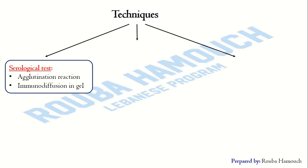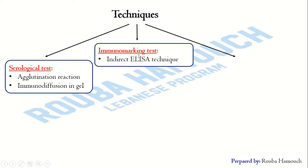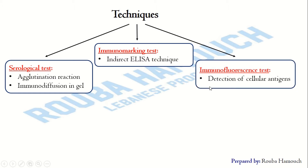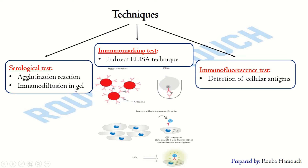There are three techniques that use antibodies to search for these molecules: the serological test comprising agglutination reaction and immunodiffusion in gel; the immunomarking test, especially the indirect ELISA technique; and the immunofluorescence test. These tests rely on the formation of visible precipitating immune complexes — the complex formed between an antibody and its corresponding antigen.